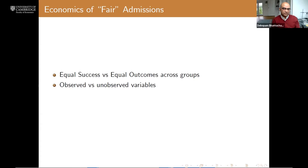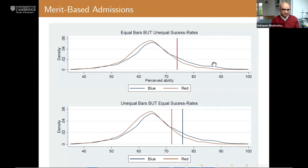When we think about what fair or merit-based admissions mean, we have to distinguish between what you might call equal success rates and equal outcome thresholds. In order to do that distinction, you need to be careful about what kind of things we observe as researchers and what we don't.